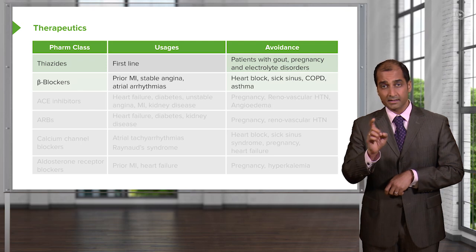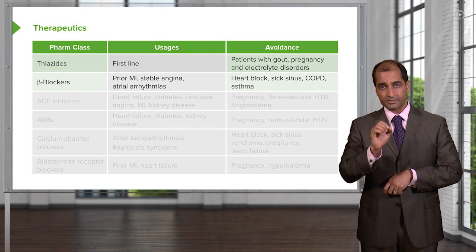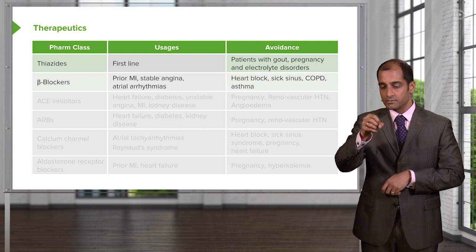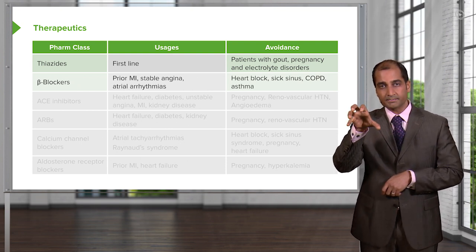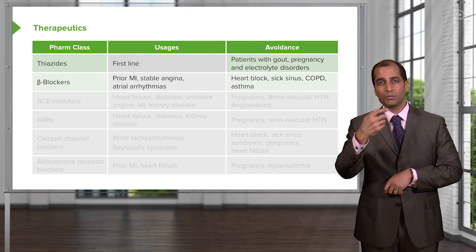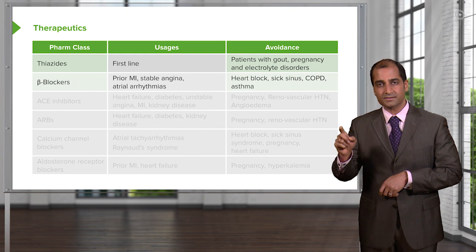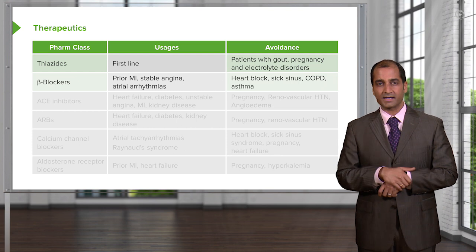COPD — remember, if you stimulate your beta-2 receptors with albuterol inhalers, they bronchodilate. So make sure you pay attention in great detail to when you use a beta blocker to ensure your patient is not suffering from bronchospasms, because you may exacerbate it. Same thing with asthma.